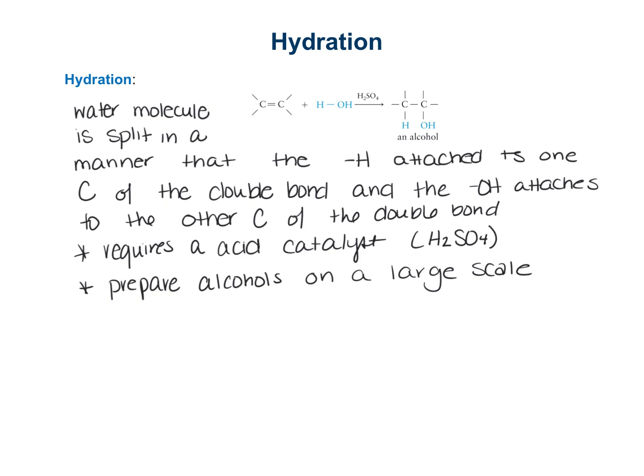This reaction is also important in living organisms, but the catalyst is an enzyme instead of sulfuric acid. For example, one of the steps in the body's utilization of carbohydrates for energy involves the hydration of fumaric acid, which is catalyzed by the enzyme fumarase. This is one of the places where this reaction applies to biochemistry, which we'll get to later.